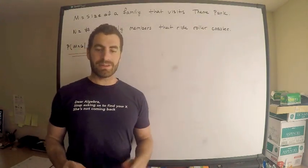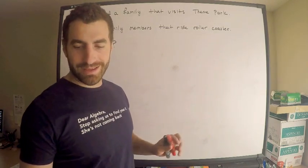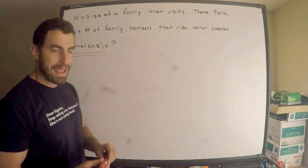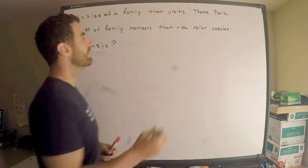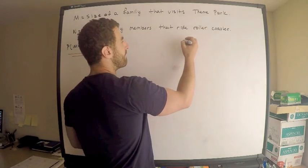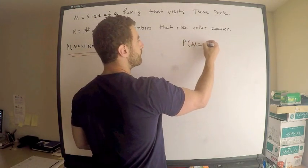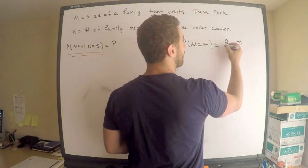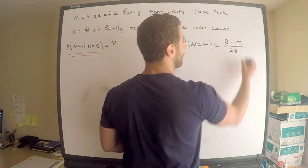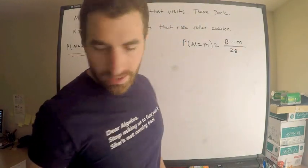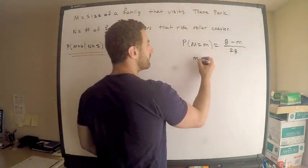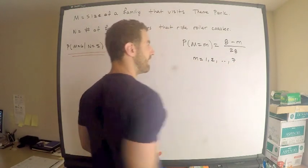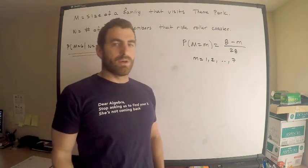Let me write down what else they give me. They also give me the probability mass function for my random variable M. M is a discrete random variable, and they tell me that the probability that M equals little m is equal to 8 minus little m divided by 28. And this is where little m equals 1, 2, up to 7. So that's all well and good.